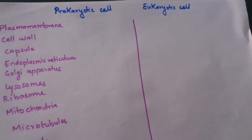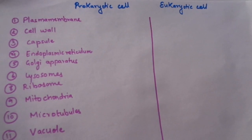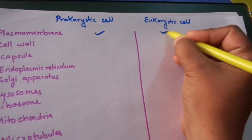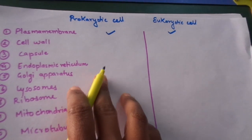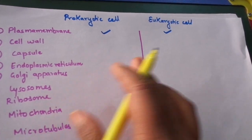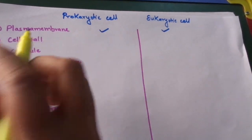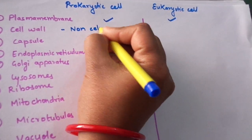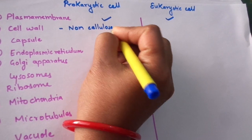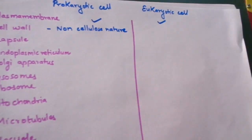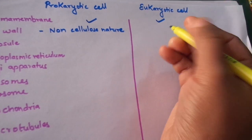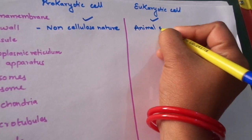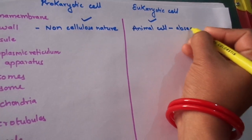The first difference between the prokaryotic and eukaryotic cell is the plasma membrane — it is present in both cases. The cell wall is present in the prokaryotic cell and it is of non-cellulosic nature. However, in the eukaryotic cell, in the animal cell, the cell wall is lacking — it is absent.